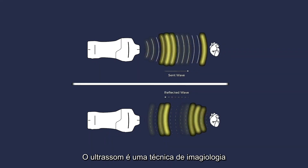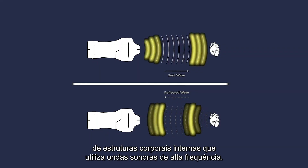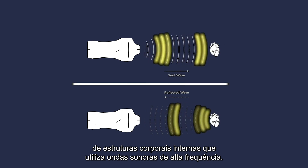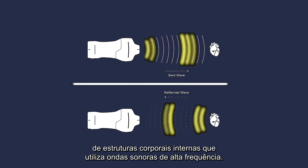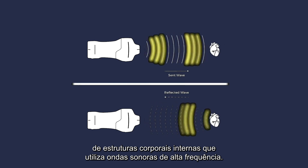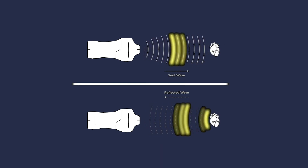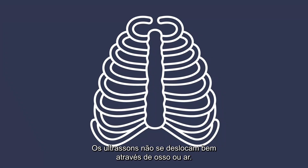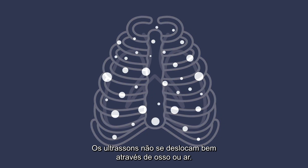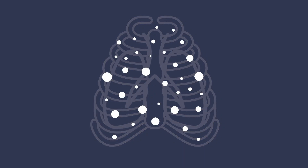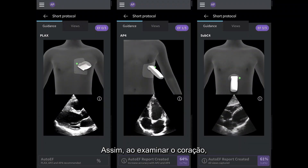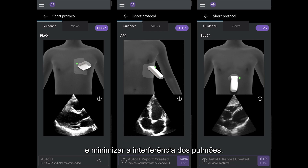Ultrasound is an imaging technique used to image structures inside the body using high-frequency sound waves. Ultrasound does not travel well through bone or air, so when scanning the heart, we need to scan within the intercostal spaces and minimize lung interference.